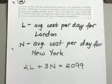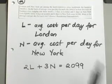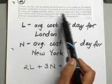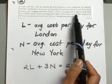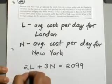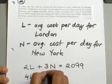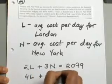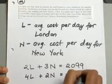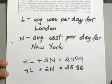In the same way, you can come up with your second equation in your system, and the information here is four days in London and two days in New York cost you $2,586. So that is 4L plus 2N equals $2,586.